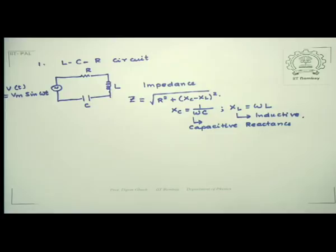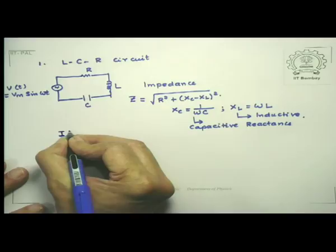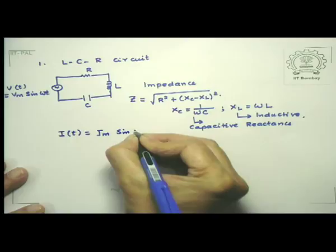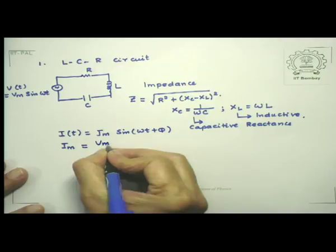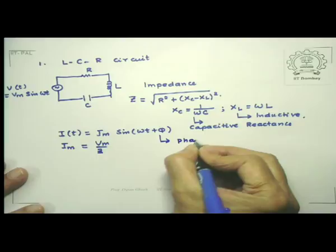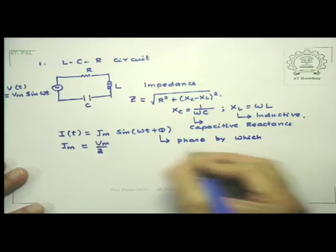Notice that unlike a resistance, the impedance depends upon the values of R, L, and C, but it also depends upon the frequency of the source. The value of the current I is given by Im sin(ωt + φ), where the amplitude of the current is Vm/Z, and φ is the phase by which the current leads the voltage.